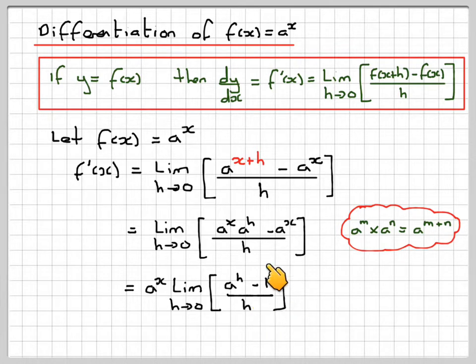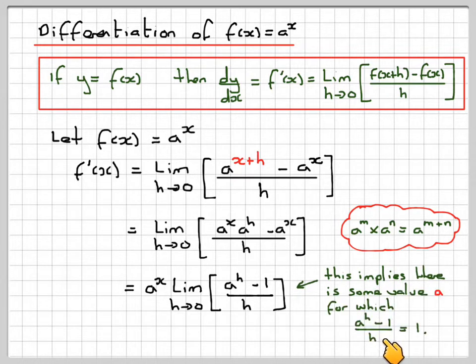Now if you look closely at this, what happens if this limit for a particular value of a is equal to 1? What does that actually mean? This implies that there must be some value of a for which a to the h minus 1 over h will be equal to 1 as h goes to 0.